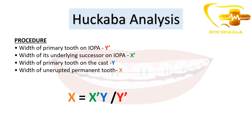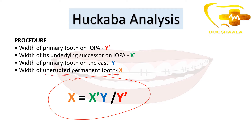The formula used is: X = X′ × Y / Y′. Here, X is the width of the unerupted permanent tooth — what we want to find. X′ is the width of its underlying successor on the IOPA radiograph. Y is the width of the primary tooth on the cast (the erupted primary tooth). Y′ is the width of the primary tooth on the IOPA radiograph.